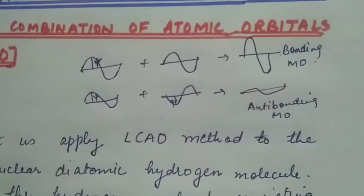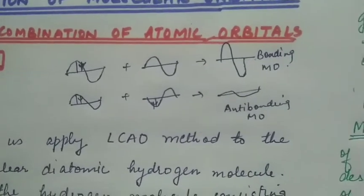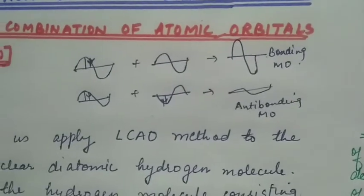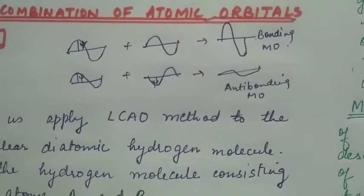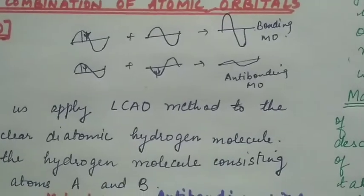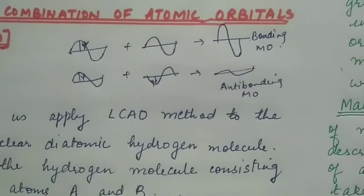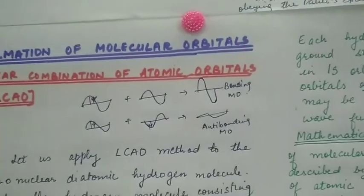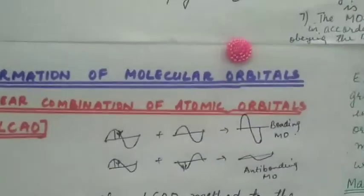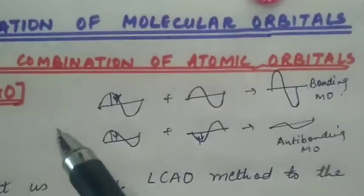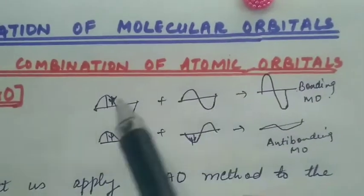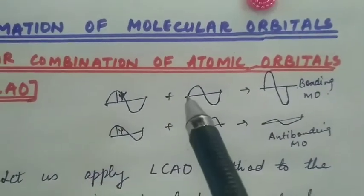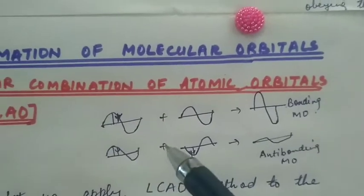Since the Schrödinger equation cannot be solved for any system containing more than one electron, molecular orbitals — which are one-electron wave functions of molecules — are difficult to obtain directly. The atomic orbitals of two atoms which are to form the molecule will linearly combine with each other in two manners.